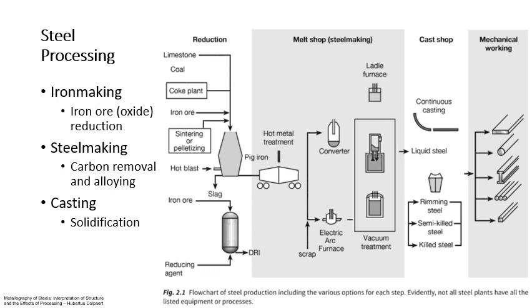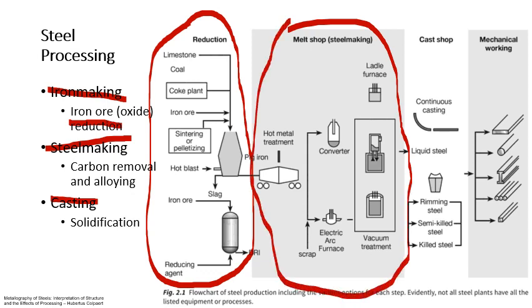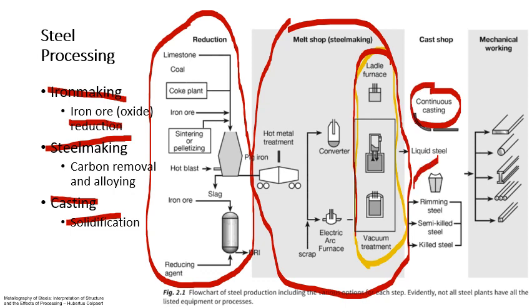In this video we're looking at the inner rings of that steel wheel — the iron making, steel making, and casting parts of the process on the way to make line pipe. Iron making is the reduction of the iron ore. This visual flow diagram shows these processes, and the second part, steel making, is removal of carbon and alloying. The secondary refining aspects are circled here, and casting is solidification, whether continuous casting or ingot casting.